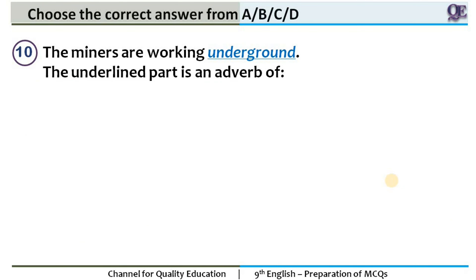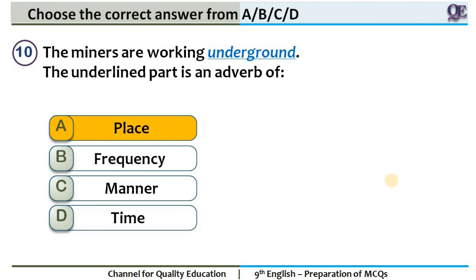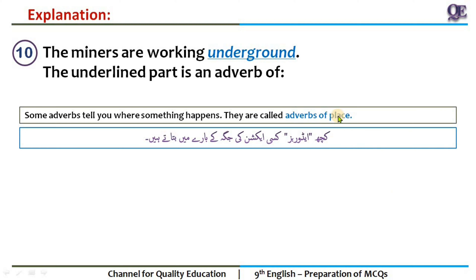Question 10: 'The miners are working underground.' Four options — think for 10 seconds. The answer is adverb of place. Underground — the name itself tells you. Some adverbs tell you where something happens — they are called adverbs of place. 'Underground' means the area below the ground, and the miners are working there. 'The miners' is your subject, 'are' is the helping verb, 'working' is your verb, and 'underground' is your adverb of place.